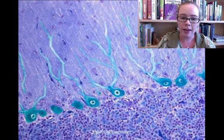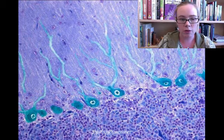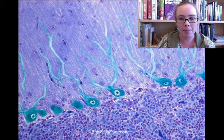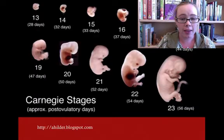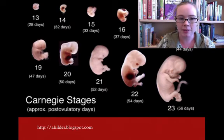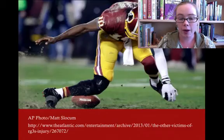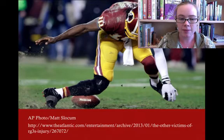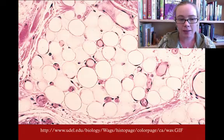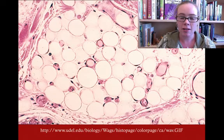Some cells don't undergo mitosis at all, like mature nerve cells, which is why it's so important to keep them healthy — there's no way of healing them. But for everything else, our growing from a small embryo to a fetus, to a baby, to an adult is done through mitosis. Furthermore, if you have any injuries, it is mitosis that heals those injuries.